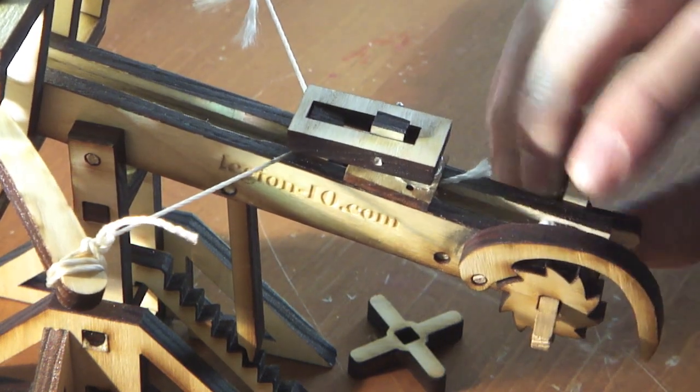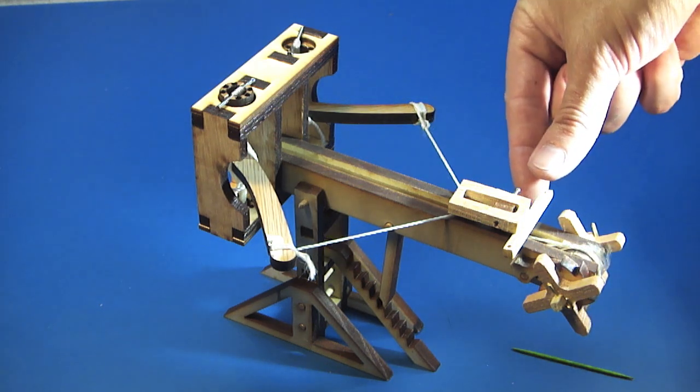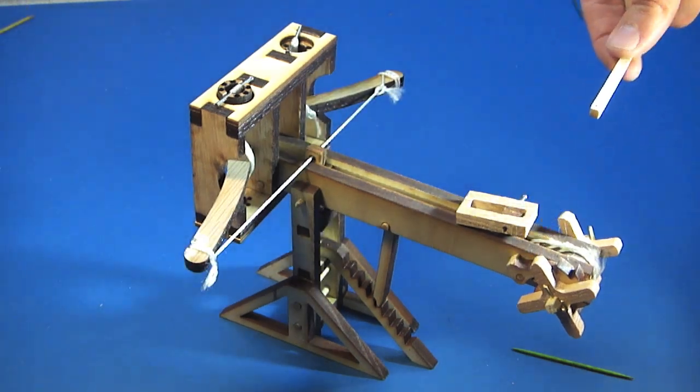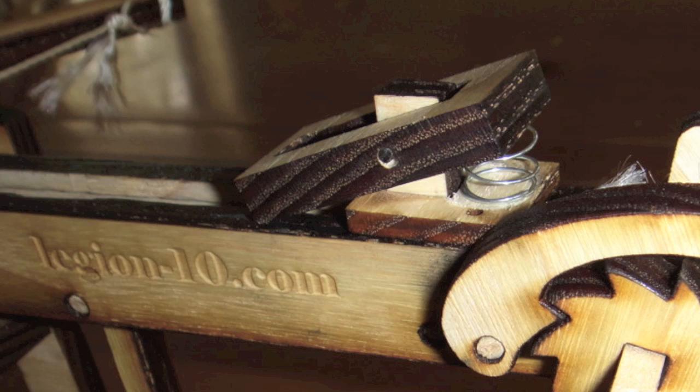Version 5 used a rather primitive triggering mechanism, to say the least. So on version 6, I improved that by using this spring-loaded model. It's much easier to use and a bit more fun and quick while doing my testing. It's not historically accurate, but this is a desktop model.